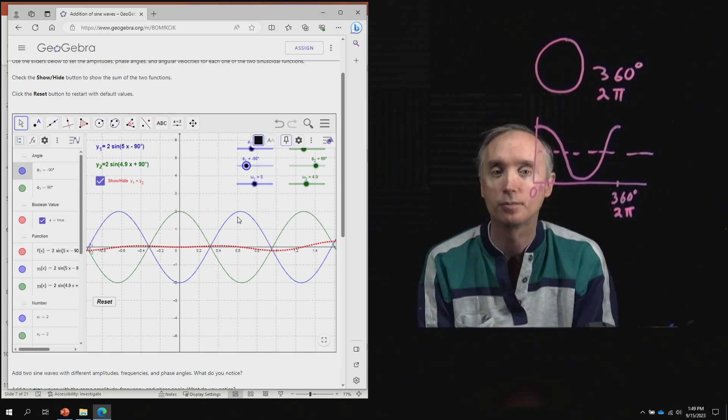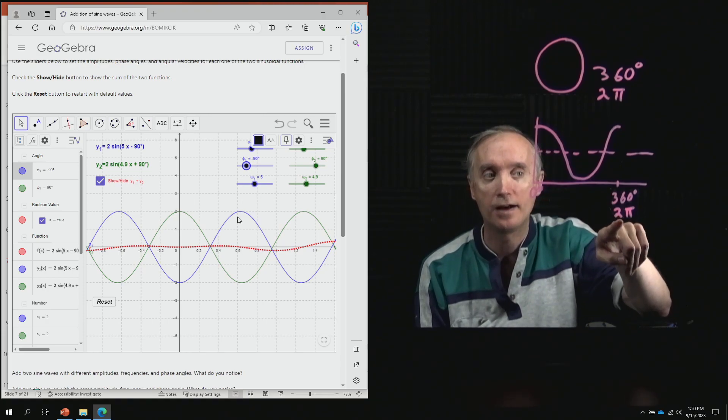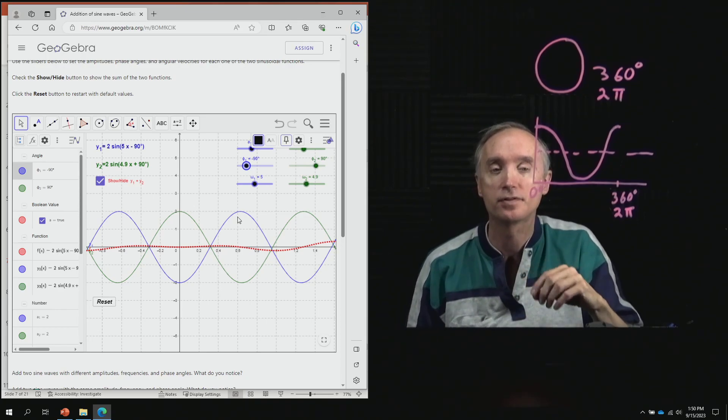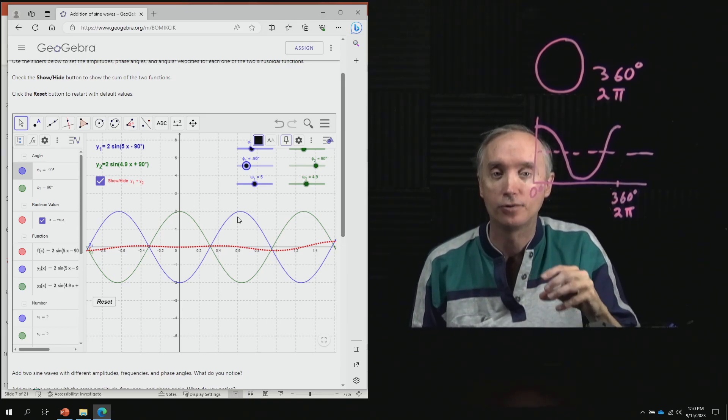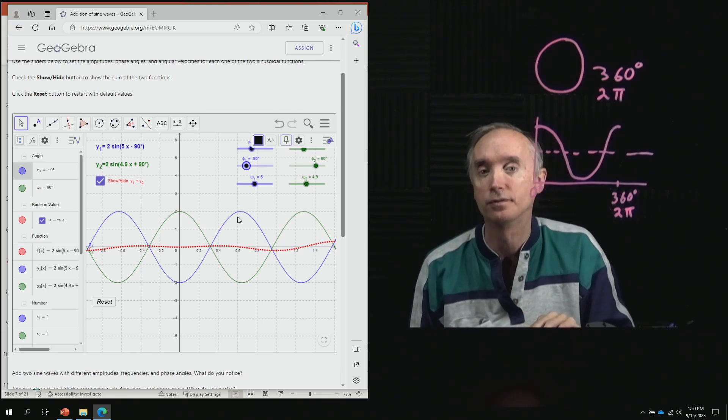And then that's what's going to produce the destructive interference. Or what's half of 2 pi? Well, it's pi. So you could also say that if it's pi out of phase, then it's going to be destructive interference.